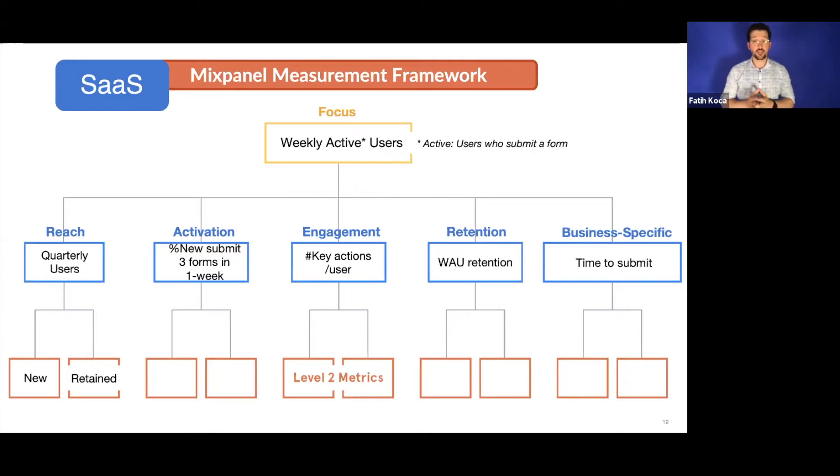Second metric is activation. Again, this is a metric that captures the effectiveness, the health of first-time user experience. Here, percentage of new users who submit three forms in one week could be an activation metric, if we think it indicates long-term sustainable growth of the business, if it indicates the reduction in the probability of churn for users. I assume many people have heard Facebook's famous seven friends in 10 days activation metric when they established it in the beginning of their high growth phase back in I think 2009, 2010. So this metric basically makes sure that we are giving a good first-time user experience to users.